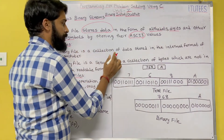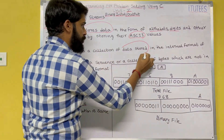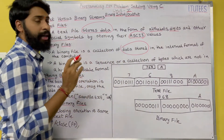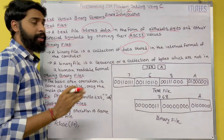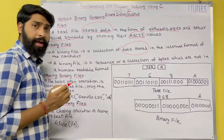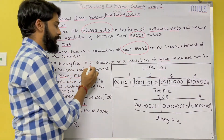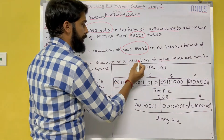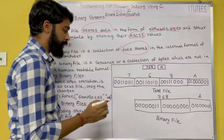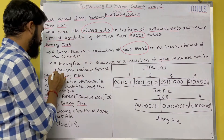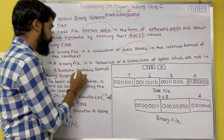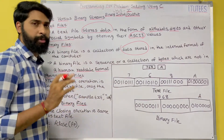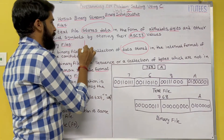Coming to binary files: a binary file is a collection of data stored in the internal format of the computer. A binary file is a sequence or collection of bytes which are not in a human-readable format.